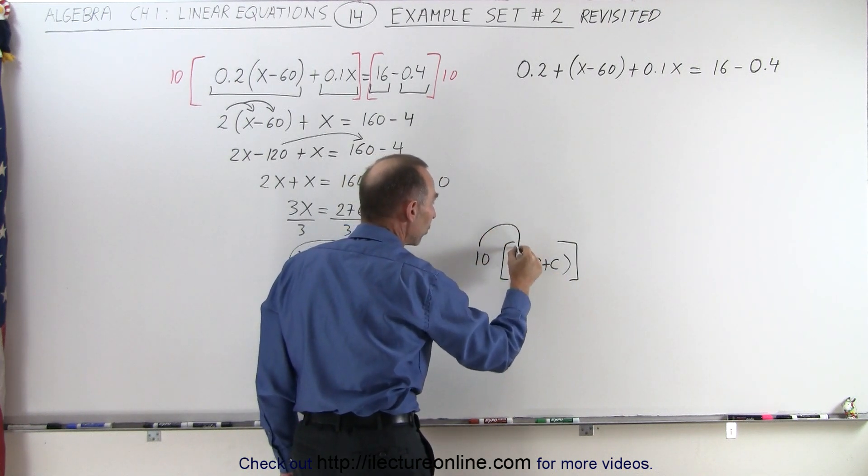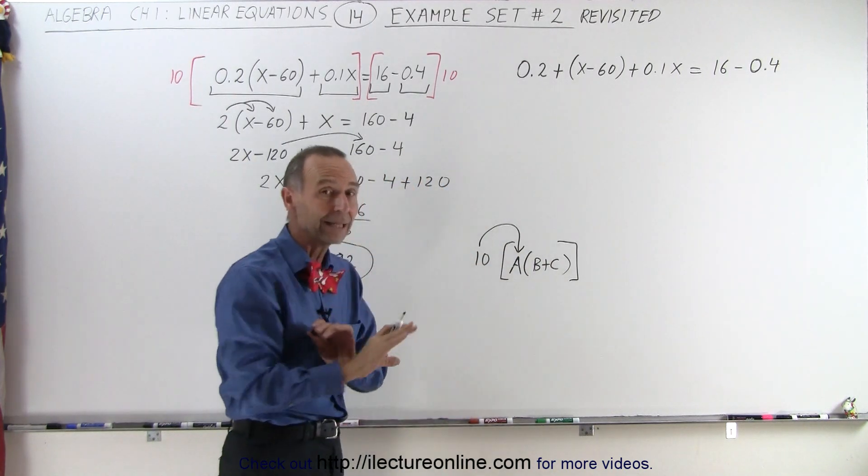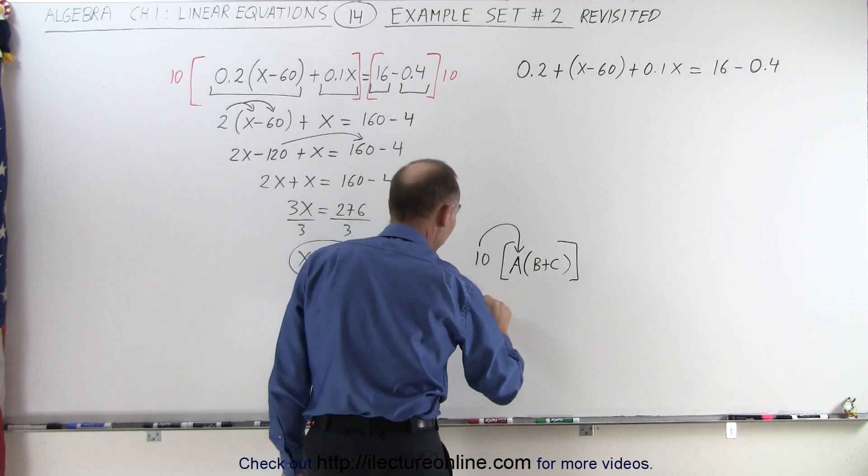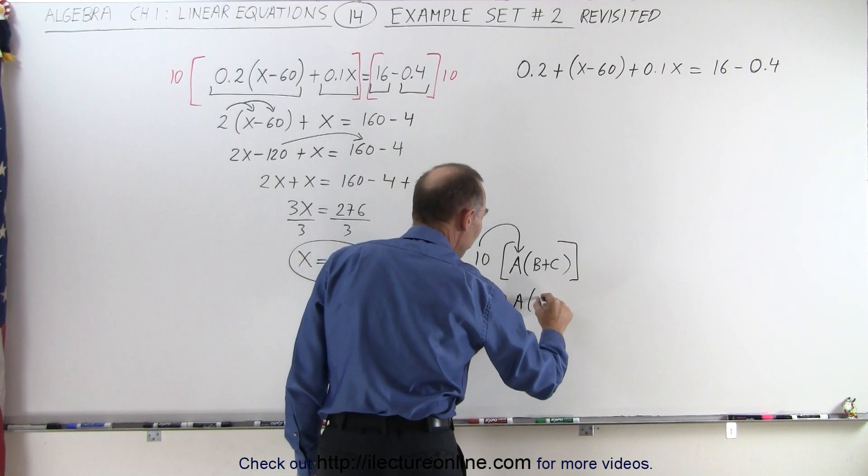I only need to multiply it once with the a not a and the b plus c that would make it incorrect. So the result is that this would be equal to 10 times a times b plus c.